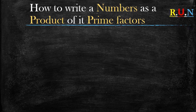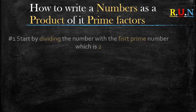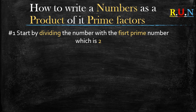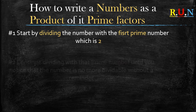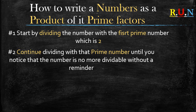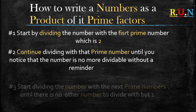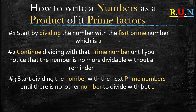How to write a number as a product of its prime factors. Rule number one: start by dividing the number with the first prime number, which is two. I would advise you to memorize at least the first ten prime numbers. Rule number two: continue dividing with that prime number until the number is no longer divisible without a remainder. Rule number three: start dividing with the next prime number until there is no other number to divide with but one.